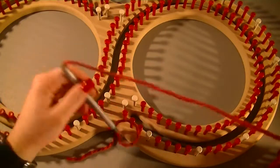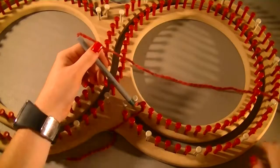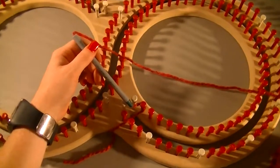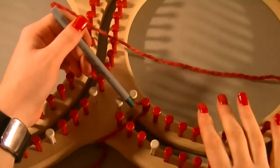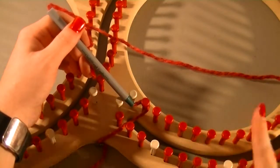First of all, you're going to need your yarn, and this is a really good gauge to use a tensioner with. Your loom is going to have white pegs on it. Those white pegs you skip.